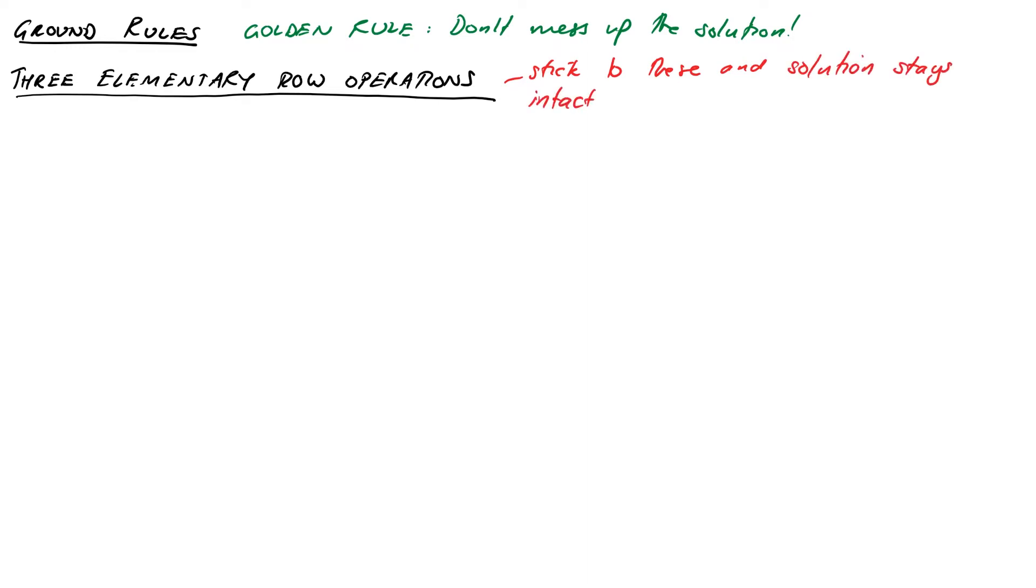These operations are row swap, and we write that one as Ri ↔ Rj. This one swaps rows i and j around. For example, if we've got the matrix [0, 2, 3, -1; 0, -1, 1, 2; 3, 0.56, -3], we might want to swap rows 1 and 3. It's just reordering the equations, so the new matrix would be [3, 0.56, -3; 0, -1, 1, 2; 0, 2, 3, -1].